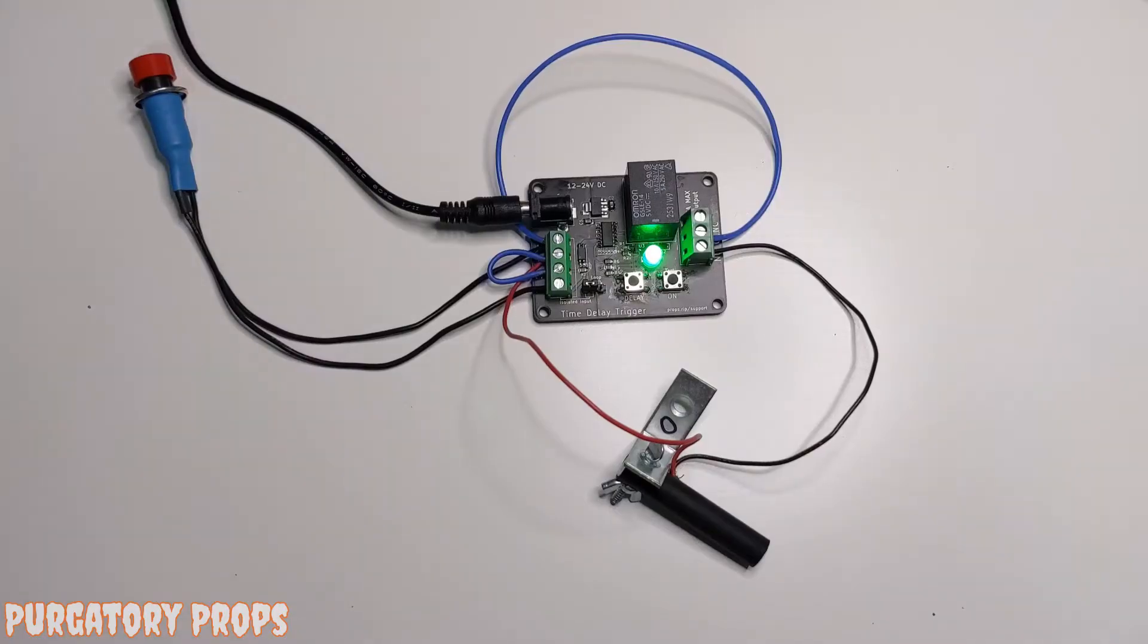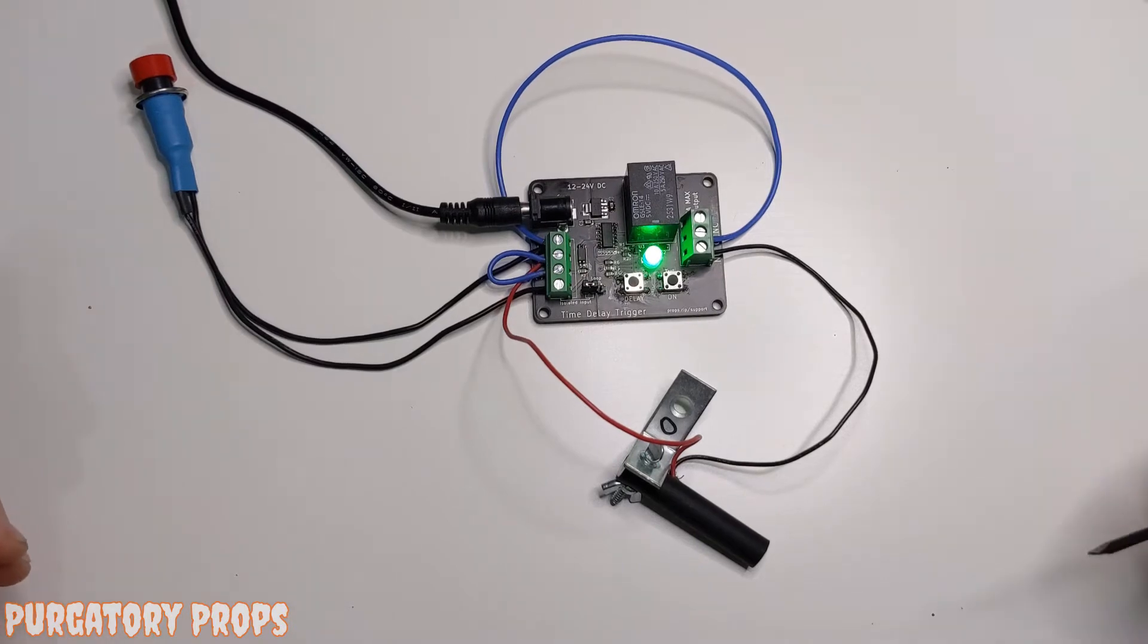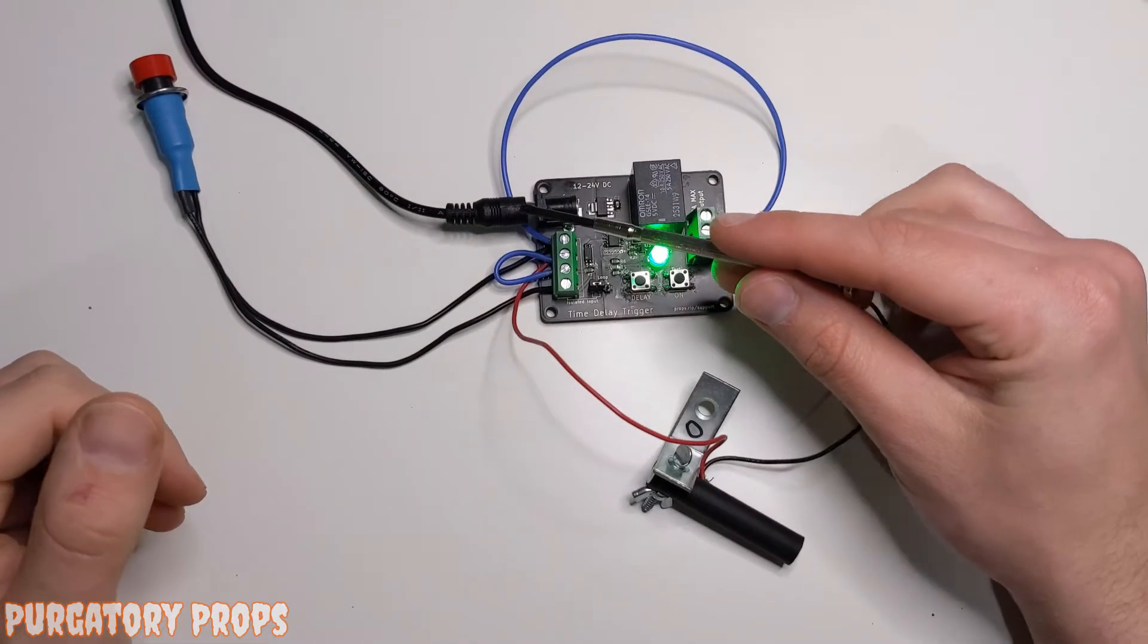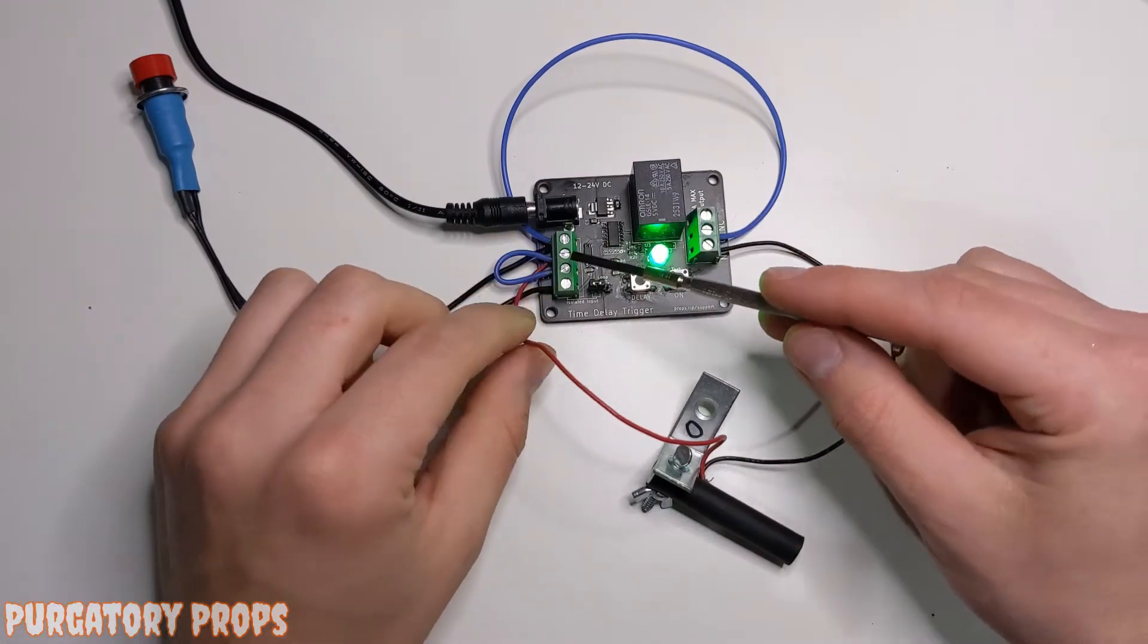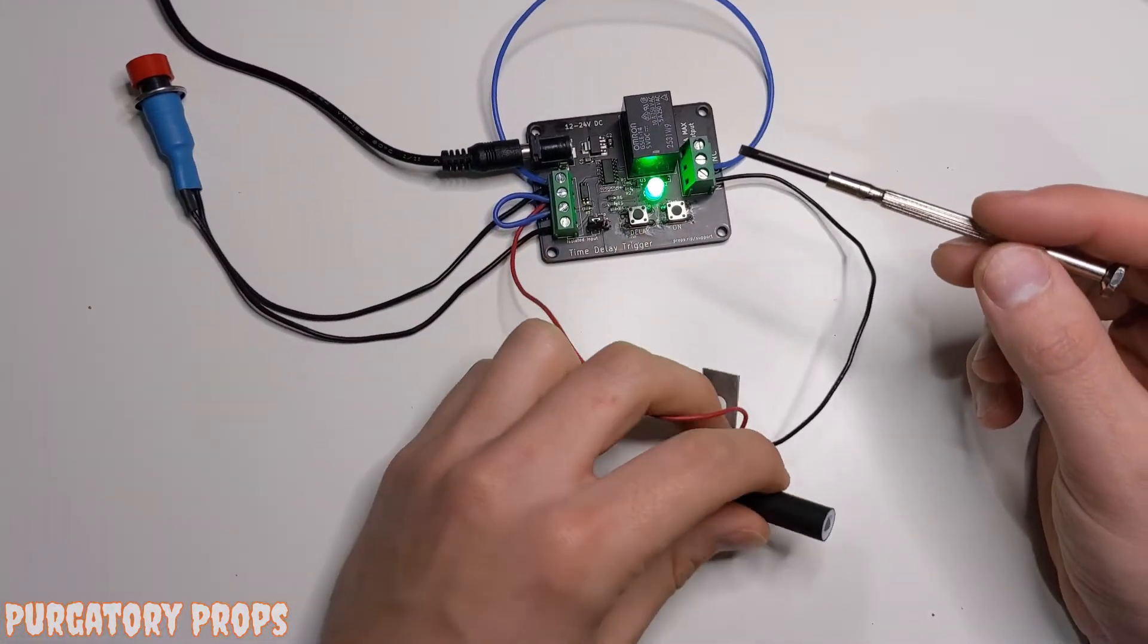So here we have a really basic setup for the time delay trigger. We've got power using the DC jack and an LED hooked up to the relay.